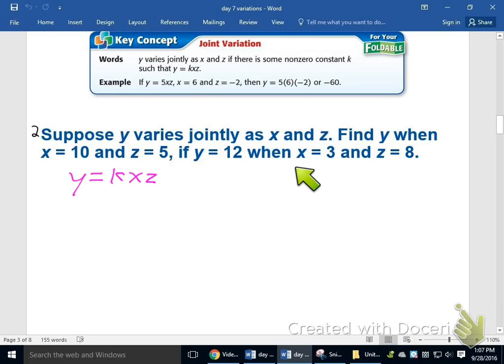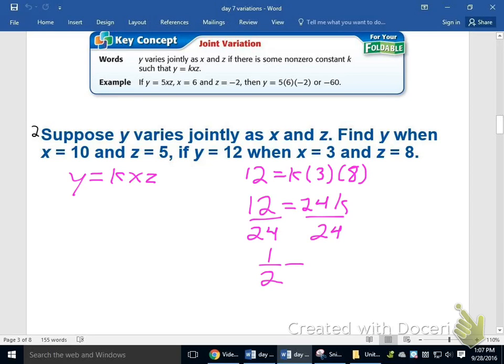y equals 12 when x equals 3 and z equals 8. So I'm going to substitute that stuff in. 12 equals k times 3 times 8. Now I can figure out what my constant variation is. 3 times 8 is 24. Divide by 24 on both sides, and I get 1 half is my constant of variation.